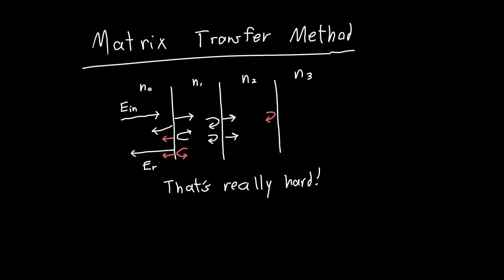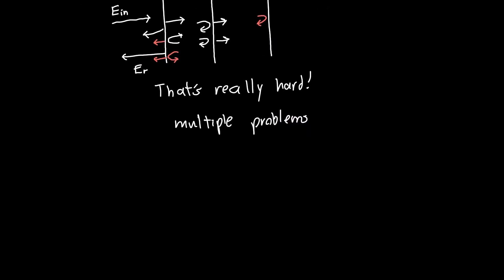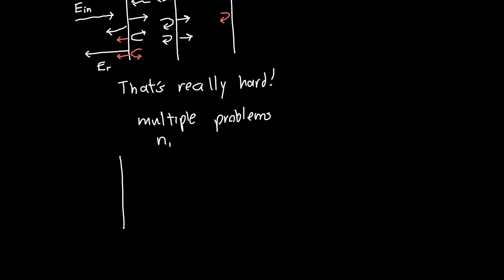The matrix transfer method basically splits this up into multiple problems. It says: dealing with four or three interfaces at the same time was super hard, so let's just do one at a time and do something clever.